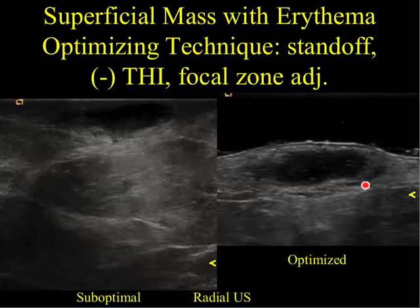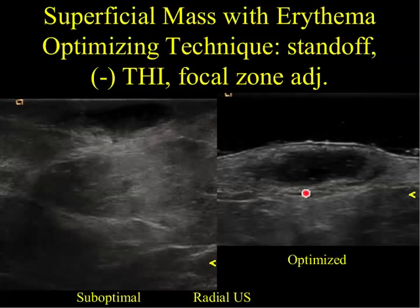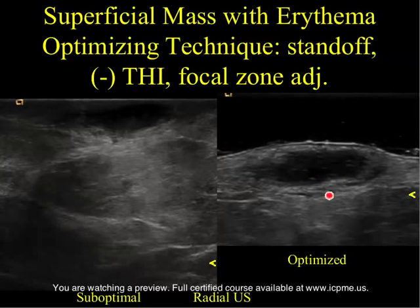We're going to take off tissue harmonic imaging. One of the things I find with harmonics is that you sometimes lose fine boundary detail. On the suboptimal image on the left, it's very difficult to visualize the skin line, whereas on the optimized image on the right, we can now see the skin line and we can see that this hypoechoic lesion is confined to the skin. So just by putting a standoff on, taking harmonics off, and adjusting our focal zone, we've created a diagnostic image.